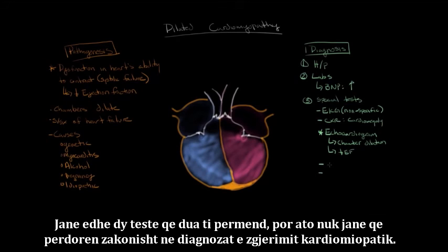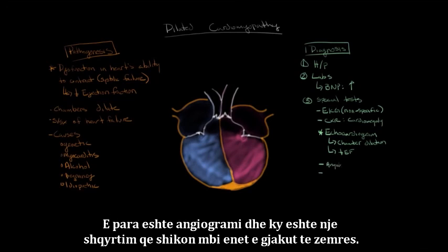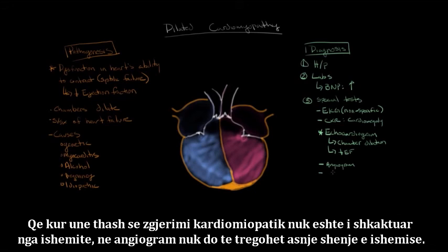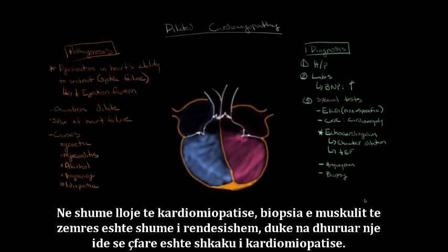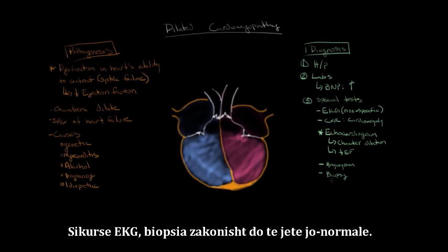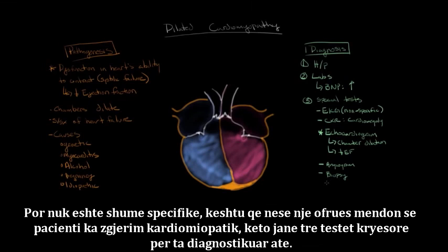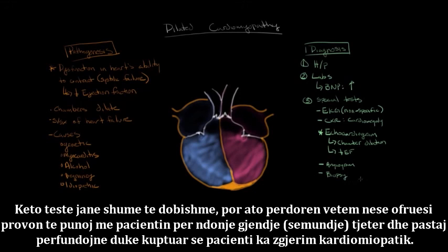There are two other tests worth mentioning, though they're not routinely used in the diagnosis of dilated cardiomyopathy. The first is an angiogram — a study that looks at the blood vessels of the heart. Since dilated cardiomyopathy is not caused by ischemia, an angiogram is not going to show any signs of ischemia. The last is a biopsy of the heart muscle itself. Like the EKG, the biopsy is usually abnormal but not very specific. These tests may be helpful, but are only used if the provider is working up the patient for another condition and ends up discovering dilated cardiomyopathy.